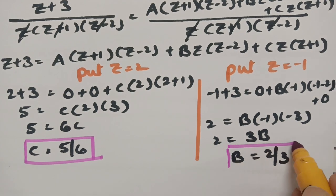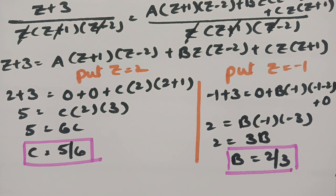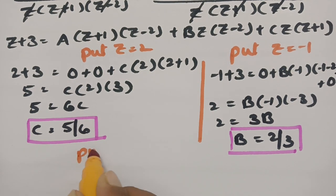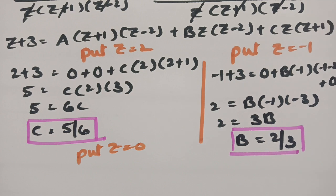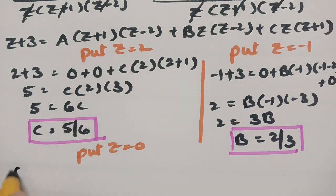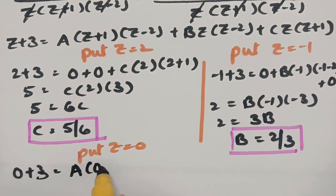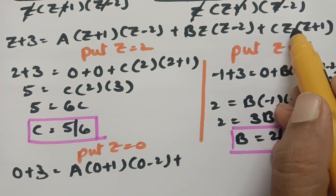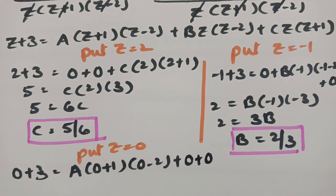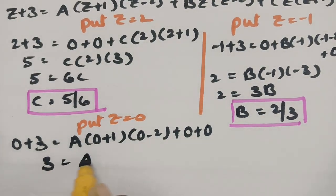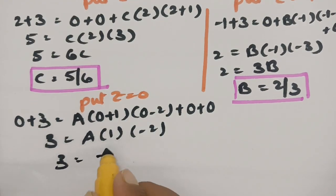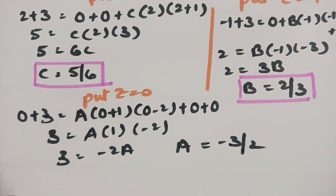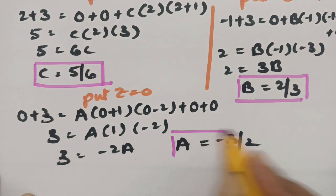To find A, put z = 0. We get 0+3 = A·(0+1)·(0-2), so 3 = A·1·(-2) = -2A, giving A = -3/2.